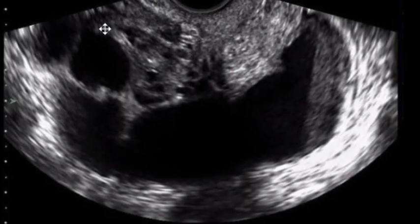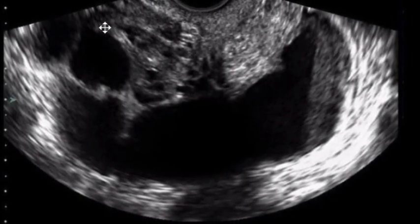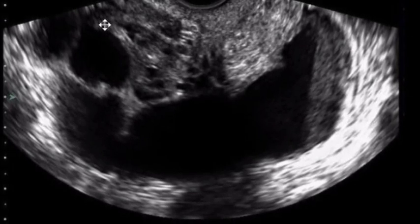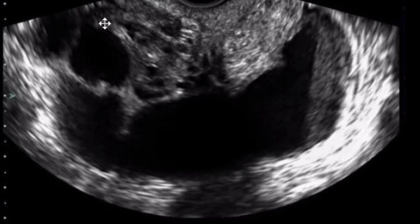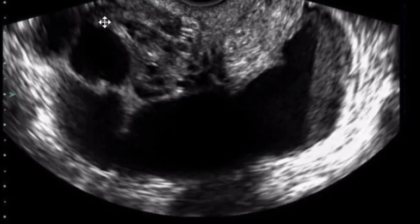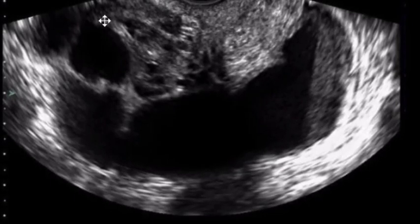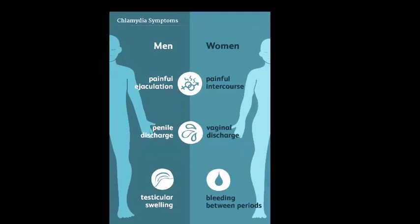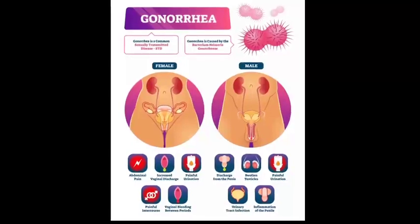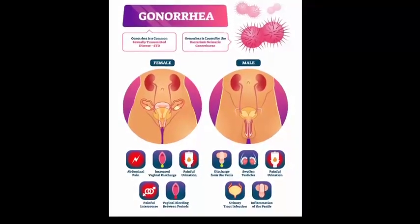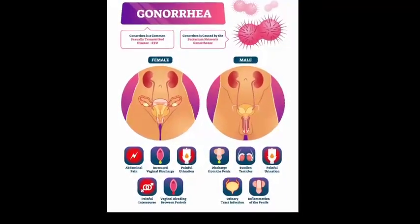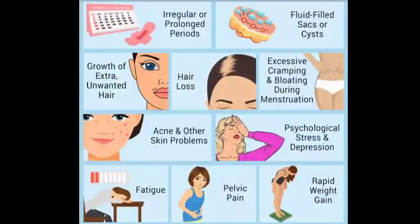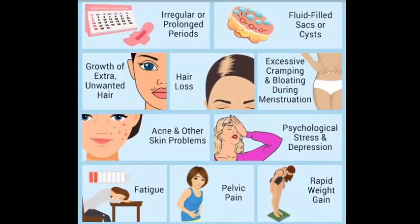PID is a polymicrobial infection that originates from upward spread of infecting organisms through the cervix and into the uterus, fallopian tubes, or peritoneal cavity. The causative agent often is never identified, but common causal agents are Chlamydia trachomatis, Neisseria gonorrhoeae, and anaerobic vaginal flora, including organisms involved in bacterial vaginosis.